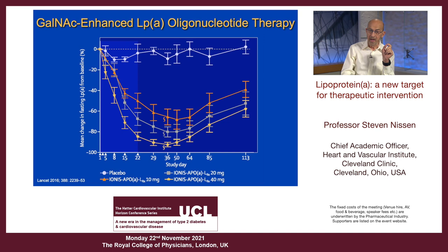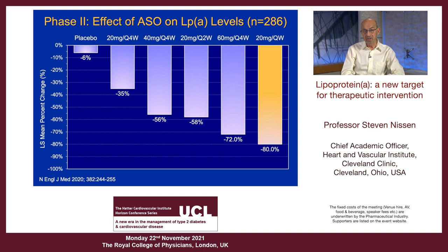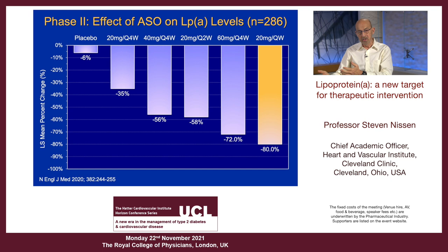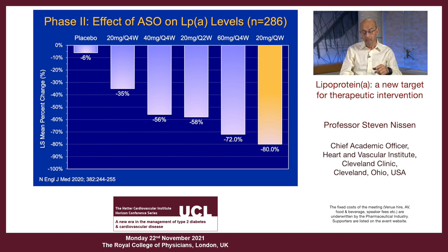This was studied very carefully in phase two — 286 patients. The top dose was 20 milligrams per week, achieving an 80% reduction in lipoprotein A levels. If your level starts at 100, you go to 20. If it starts at 200, you go to about 40. It just takes this risk factor off the table. It does have to be given by injection. But 20 milligrams per week is actually equivalent in effect to 80 milligrams given monthly. So a once-a-month injection achieving an 80% reduction in levels — an enormous reduction in risk, we hope.